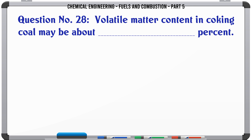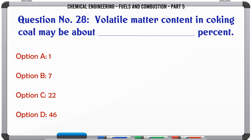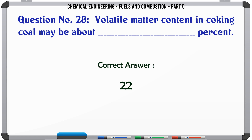Volatile matter content in coking coal may be about __ percent: A. 1. B. 7. C. 22. D. 46. The correct answer is 22.